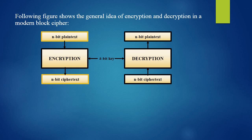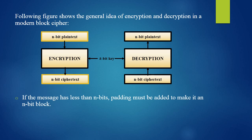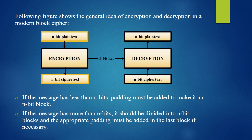We encrypt n-bit blocks. If our message is less than n-bits, we must add padding to make it an n-bit block. If the message has more than n-bits, we should first divide it into n-bit blocks and add appropriate padding to make the last block n-bits if necessary.